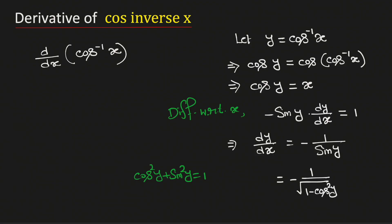And we know that cosine y is equal to x. Therefore this will be equal to negative 1 over square root of 1 minus x square.